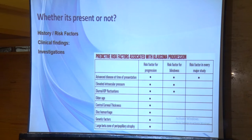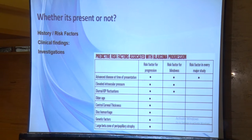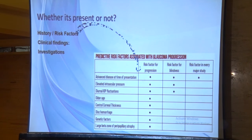Besides elevated intraocular pressure, which is the most important risk factor, we should also check the diurnal fluctuation — what is the fluctuation of intraocular pressure from morning till night. Additionally, family history of glaucoma, myopic refractive error, and disc hemorrhage are all factors we should note down.